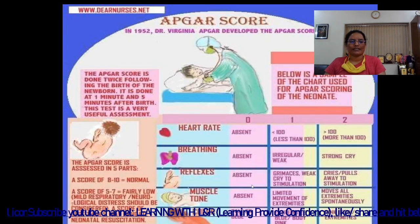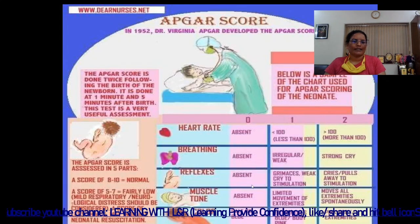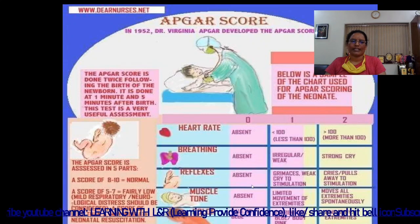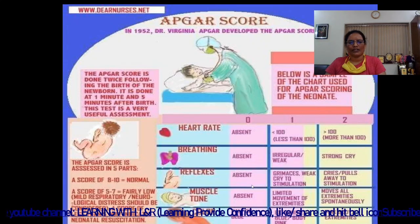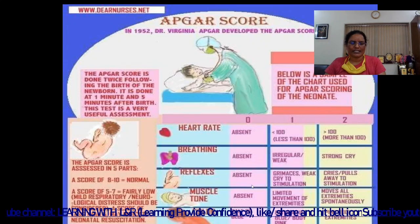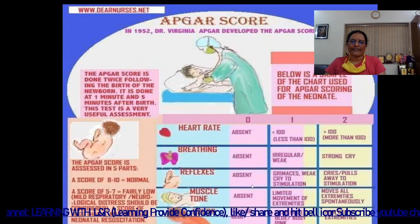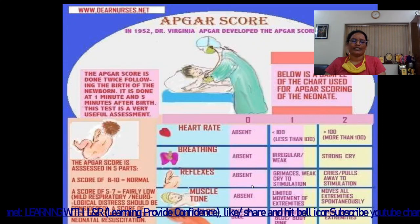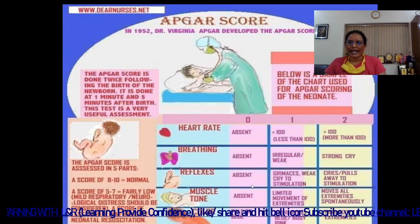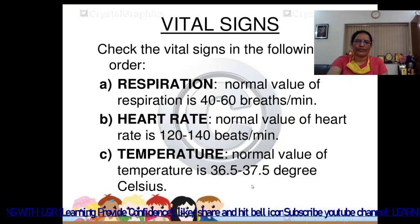Interpretation of the Apgar score: a score of 8 to 10 is normal. A score of 5 to 7 is fairly low and mild respiratory or neurological distress should be considered. A score of less than 5 may indicate the need for neonatal resuscitation to revive the child's cardiac and respiratory condition.